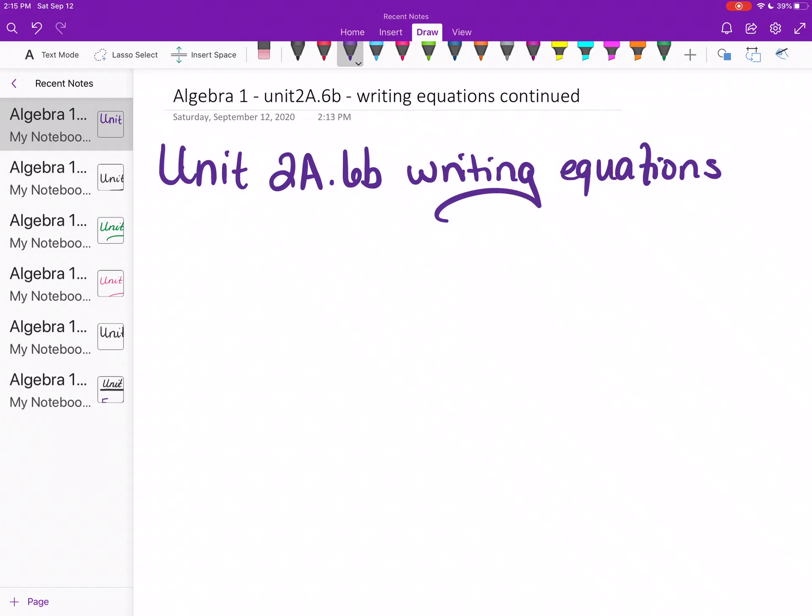Okay, we're going to do Unit 2A, Section 6B. It's kind of a continuation of writing equations. I'm going to do something a little different. What I want to do now is kind of go over what you did for homework or in class yesterday. So we're going to talk about the walk for charity a little bit. And then you're just going to do some more practice with this. This really just takes some practice.